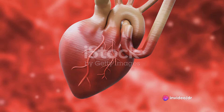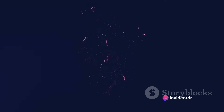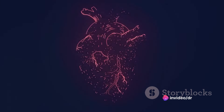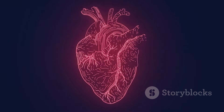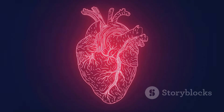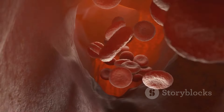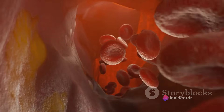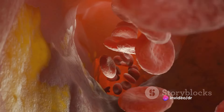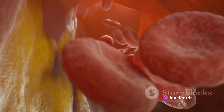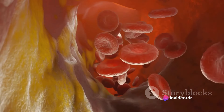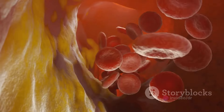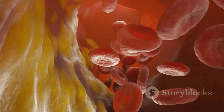It's the unfortunate consequence when the arteries that deliver blood to your heart start to narrow or harden. This happens due to the accumulation of what we call plaque — not the type you find on your teeth, but a complex mix of fat, cholesterol, and other substances present in your blood. This build-up process is also known as atherosclerosis.